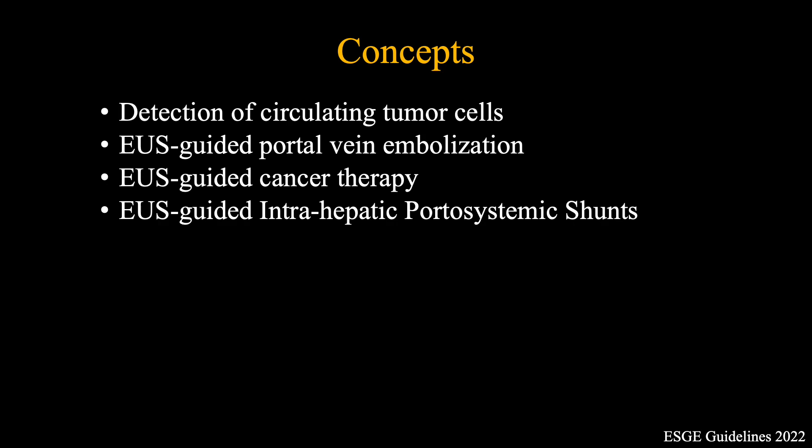Additionally, selective embolization of the right portal vein to induce left hepatic lobe hypertrophy prior to right hepatectomy, transarterial microbead injection into the hepatic artery for liver metastasis, and EUS-guided intrahepatic portosystemic shunt for complications of portal hypertension appear to hold promise in the distant future.